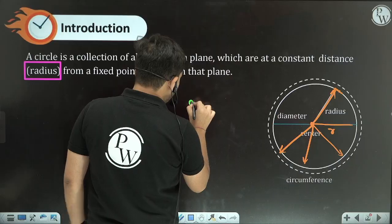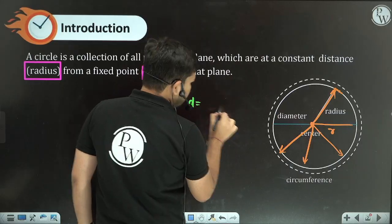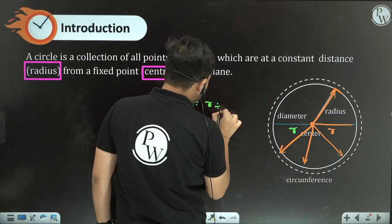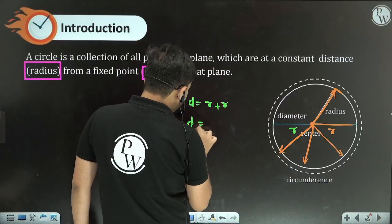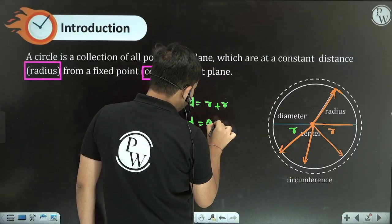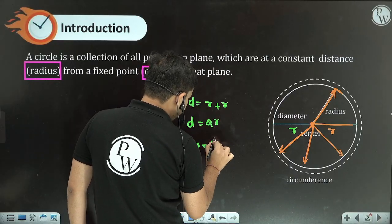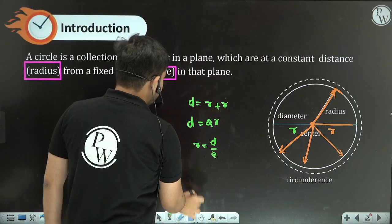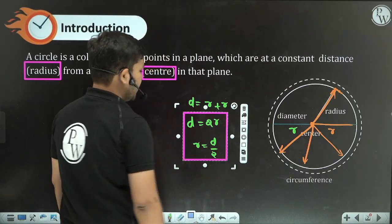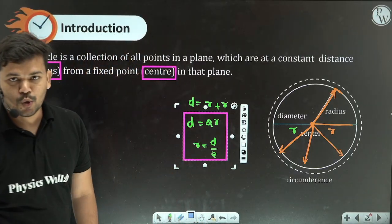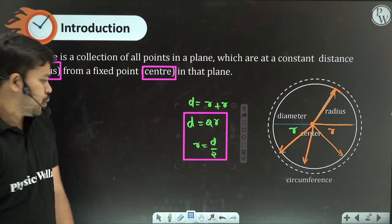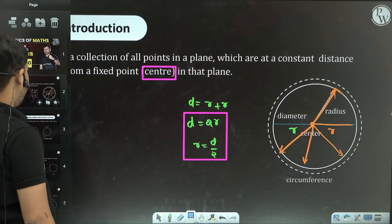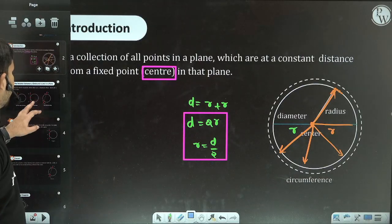If the diameter is D and the radius is R, then the relation is: D is equal to 2R, and R is equal to D divided by 2. This is how we start with the circle.